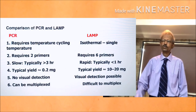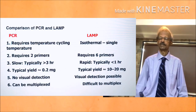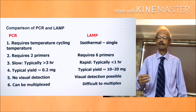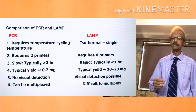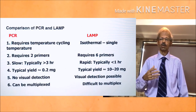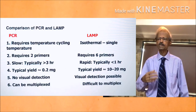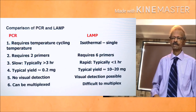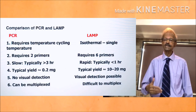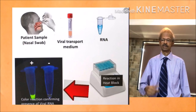Now let us compare RT-PCR with RT-LAMP. PCR requires temperature cycling at various temperatures, while LAMP requires a single temperature. PCR requires 2 primers, while LAMP requires 6 primers. PCR requires 3-4 hours for completion, while LAMP can be completed within 1 hour. The quantity of cDNA obtained is less in RT-PCR compared to LAMP. And very importantly, no visual detection is possible in RT-PCR, while in RT-LAMP visual detection is possible.